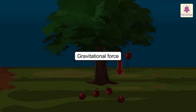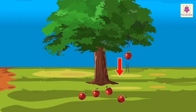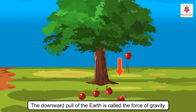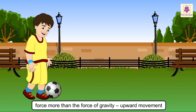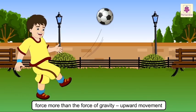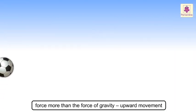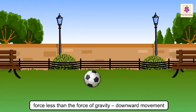Gravitational force. The force of the earth pulls all objects down towards it. This downward pull of the earth is called the force of gravity. Whenever you throw anything in the air with a force which is more than the force of gravity, it will initially go upwards. But as soon as it loses this extra force, gravity pulls it down.